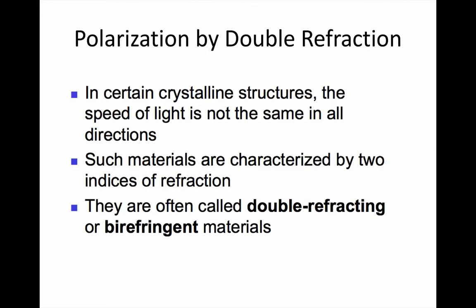A third way of polarising light is by double refraction. This happens in materials that have a crystal structure, which means that the refractive index is different for different polarisations. These are called double refractive or birefringent materials.